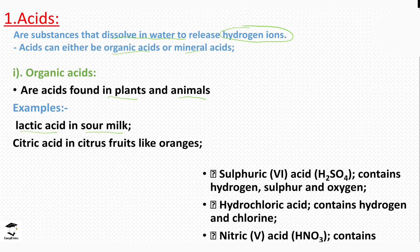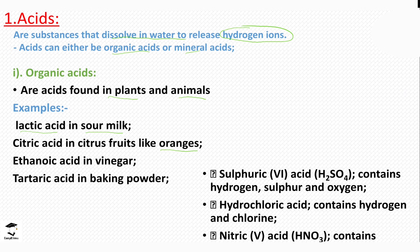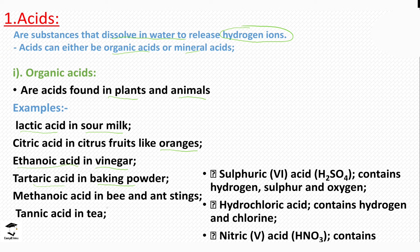We also have citric acid, which is found in citrus fruits like oranges and lemons. We have ethanoic acid, which is majorly found in vinegar — vinegar that is used for baking and can also be used for cleaning. Then we have tartaric acid, which is found in baking powder.